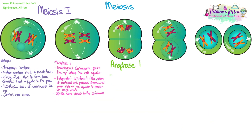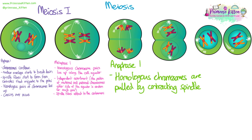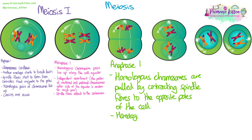Anaphase one: the homologous chromosomes from each pair are separated and pulled by contracting spindle fibres to the opposite poles of the cell. Because they are separated, each new cell will then have one copy of each chromosome, either maternal or paternal.